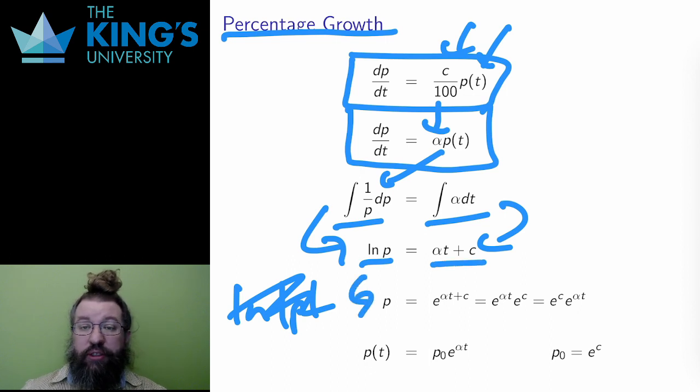Then I take an exponential of both sides to get P on the left and E to the alpha T plus C on the right. By the laws of exponents, and changing the order of multiplication, I can write the right side as E to the C times E to the alpha T. If I put T equals 0 in, all that remains is E to the C. So this E to the C must be the initial population, which I'll just write as P naught.